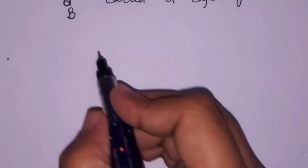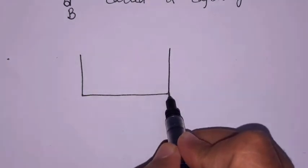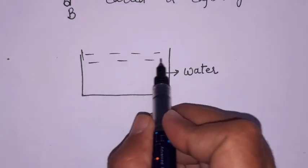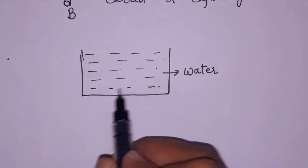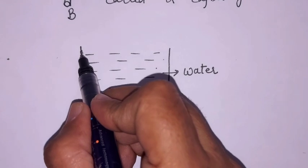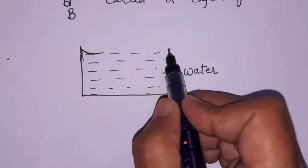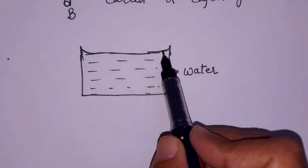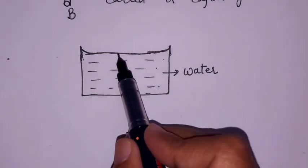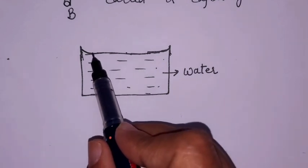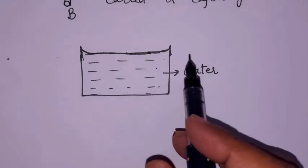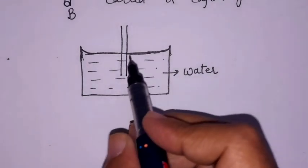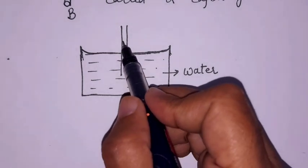Suppose we are taking water in a trough. As previously studied, near the walls the water surface becomes concave because adhesive forces are much stronger compared to cohesive forces. As we go towards the middle, the surface becomes exactly plain. Now if we dip a capillary tube in this water, water will rise inside the capillary.